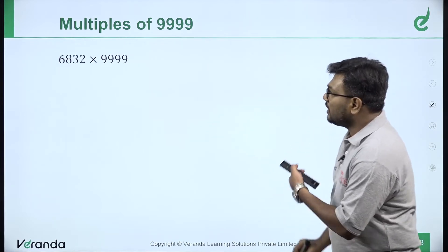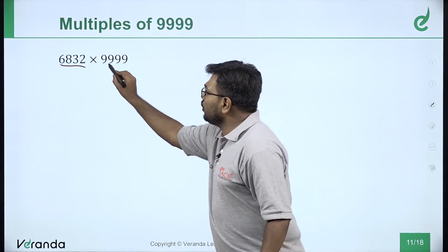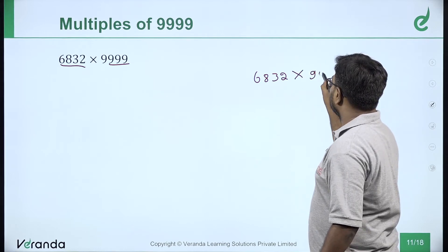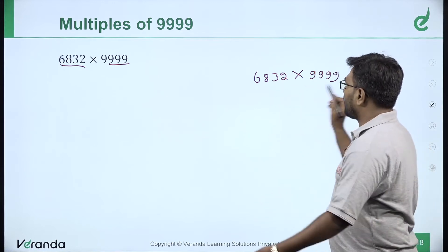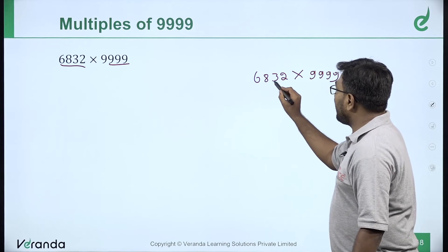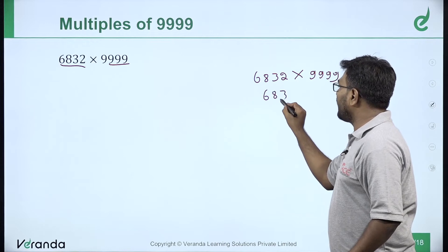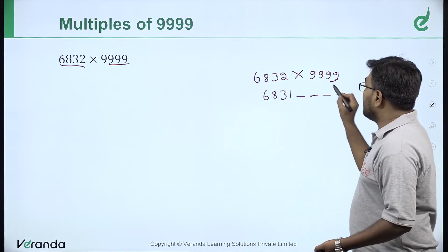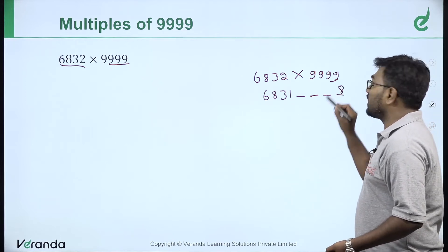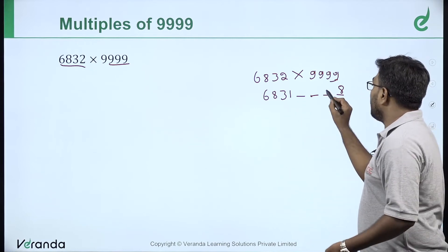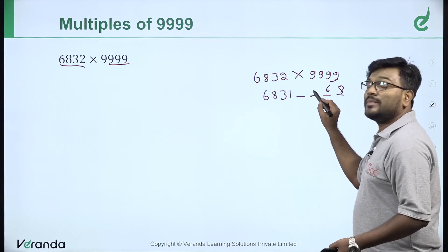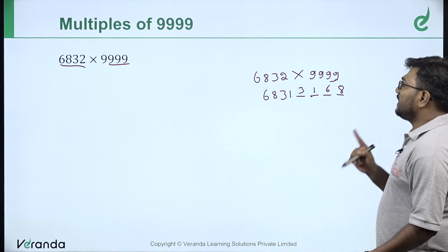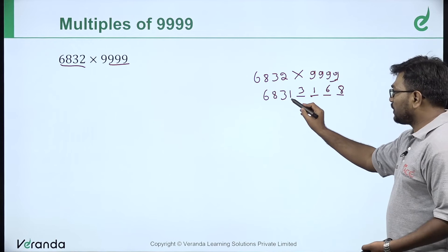Now if we look at this example: here are 4 digits and 4 digits of 9s — Case 3, equal to equal. For 6832 into 9999: first step is 6832 minus 1 = 6831. Here are 4 digits in 4 places. Now add complements to 9: 1 gives 8, 3 gives 6, 8 gives 1, 6 gives 3. Answer: 6832 into 9999 is 68313168.